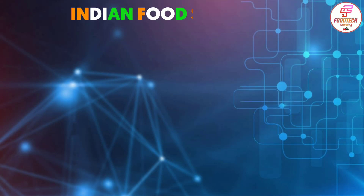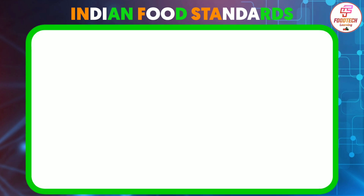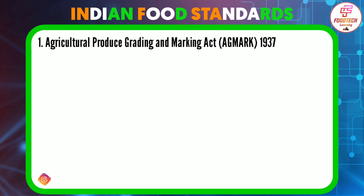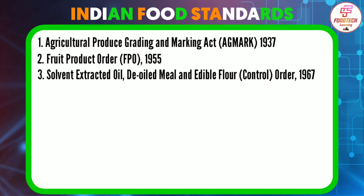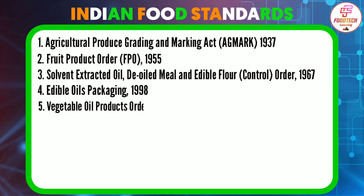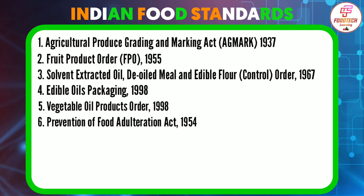Today we will know how many food standards there are in India. The Agricultural Produce Grading and Marketing Act, known as AGMARK, was passed in 1937. The Fruit Product Order, known as FPO, was passed in 1955. The Solvent Extracted Oil, De-oiled Meal and Edible Flour Order was passed in 1967. The Edible Oils Packaging Order was passed in 1998. The Vegetable Oil Products Order was passed in 1998.